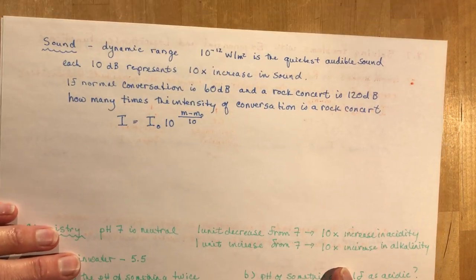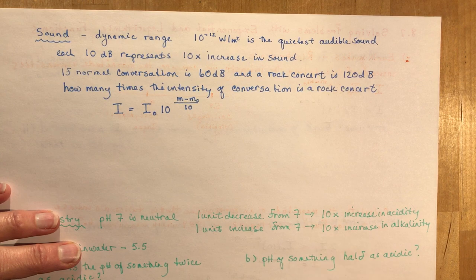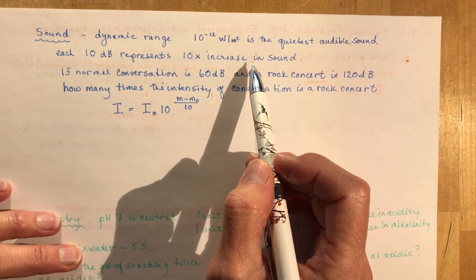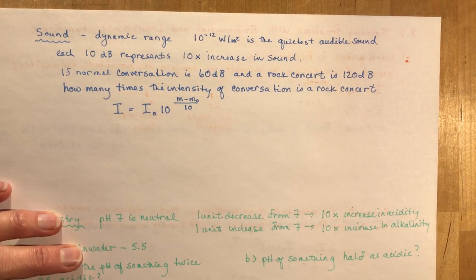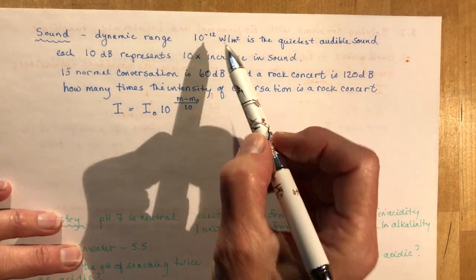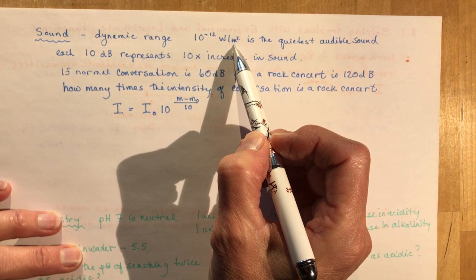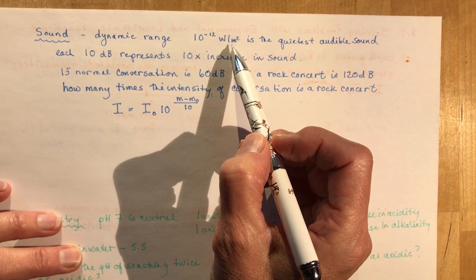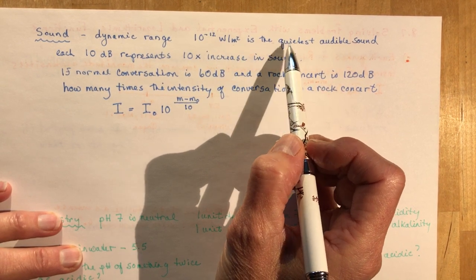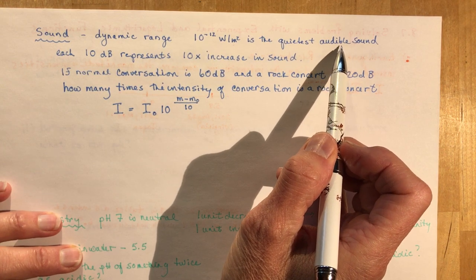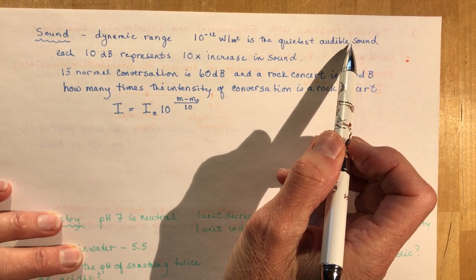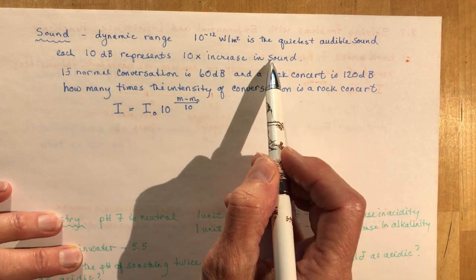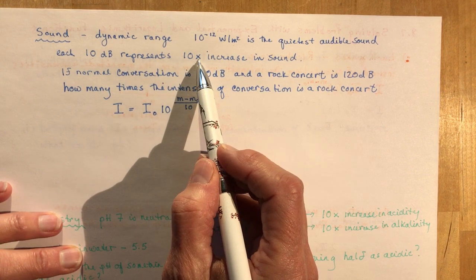Sound is interesting because we talk about the dynamic range of sound. Our ears are capable of registering sounds that are very light. So 10 to the minus 12 watts per meter squared is the quietest audible sound, like the rustle of a leaf. And each 10 decibel increase represents a 10 times increase in sound.